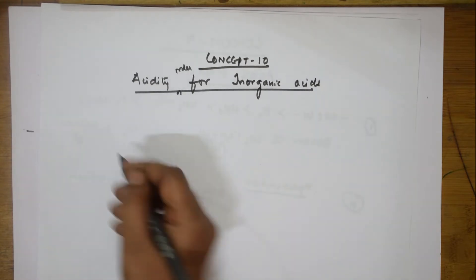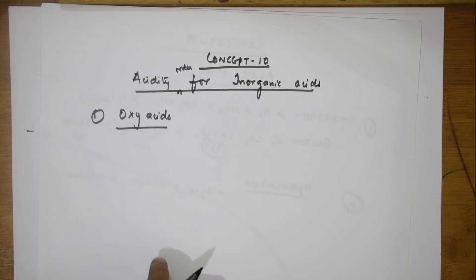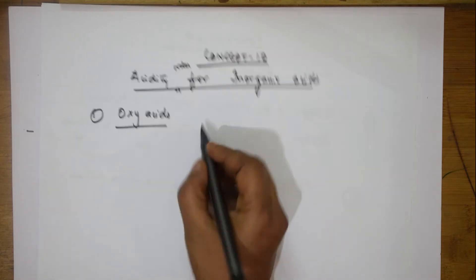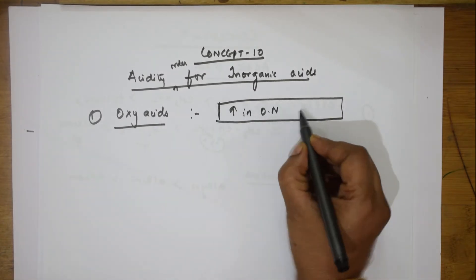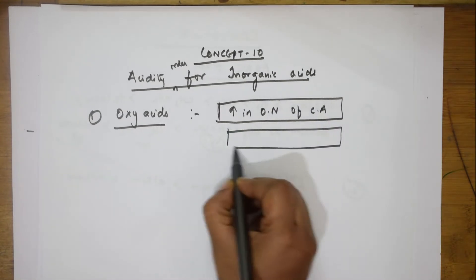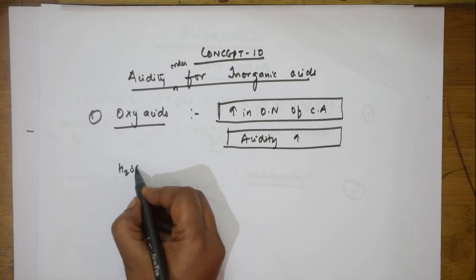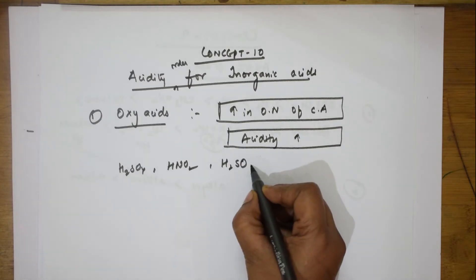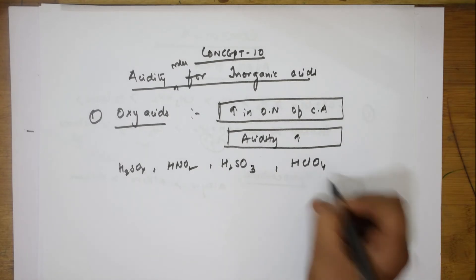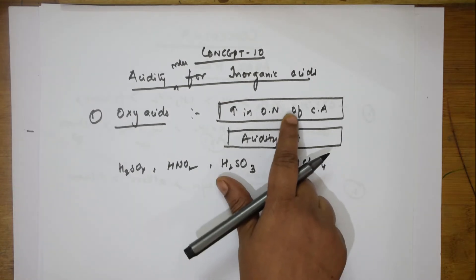Let us see the different sets. Suppose I have H2SO4, HNO2, H2SO3, and HClO4. They are asking us to arrange in increasing order of acidity. When it is inorganic oxy acids, calculate the oxidation number — very important. In H2SO4, the oxidation number of sulfur is +6. In HNO2, nitrogen is +2. In H2SO3, sulfur is +4. In HClO4, chlorine is +7.